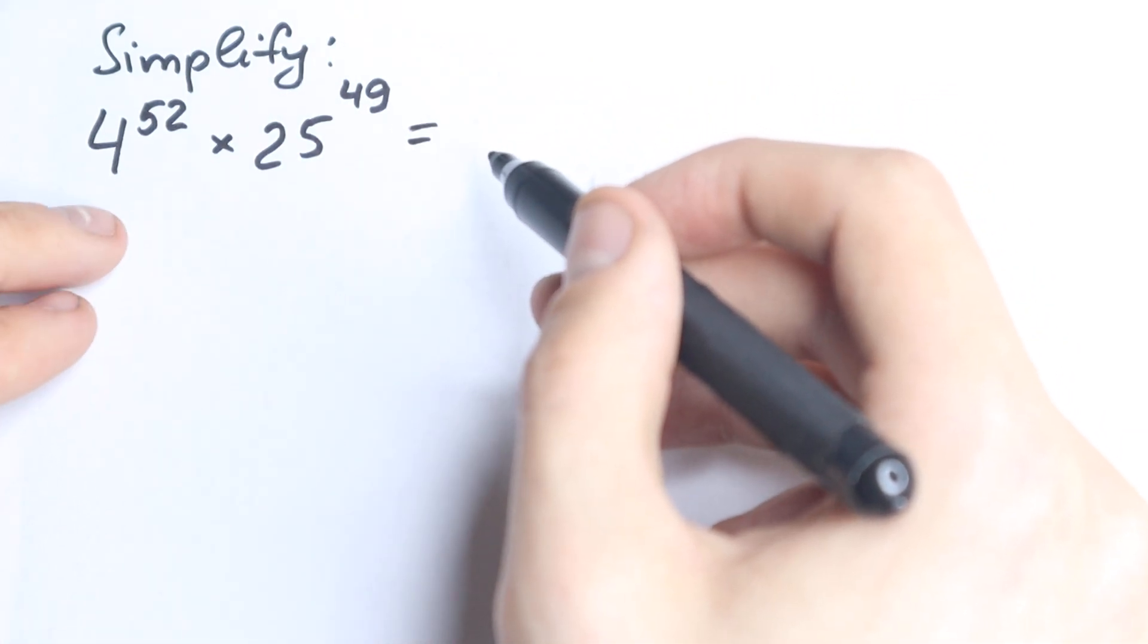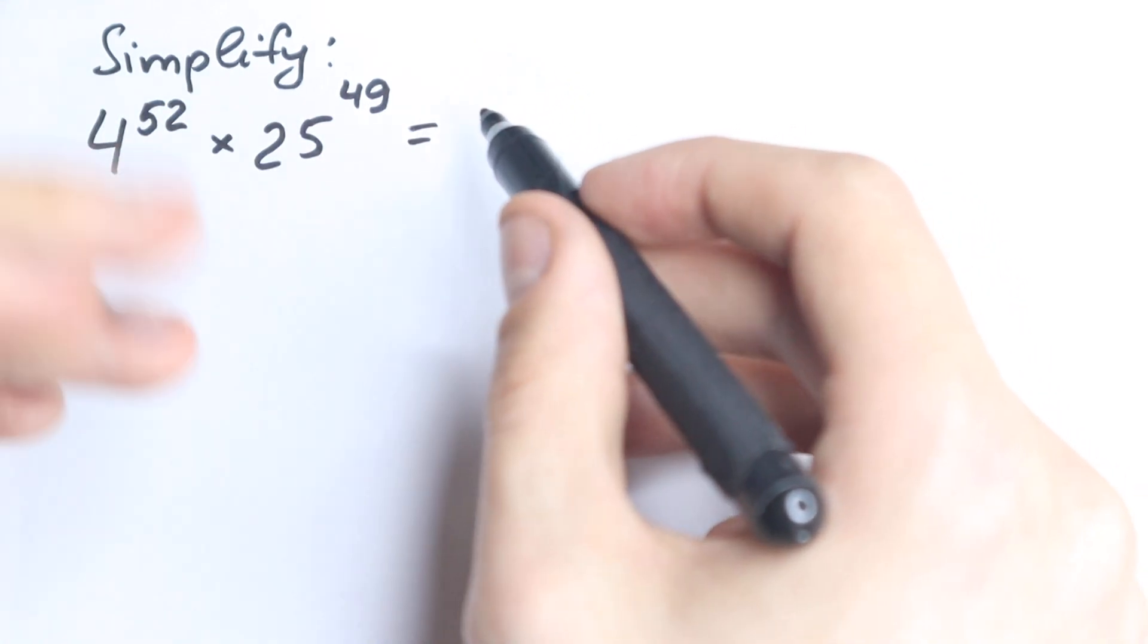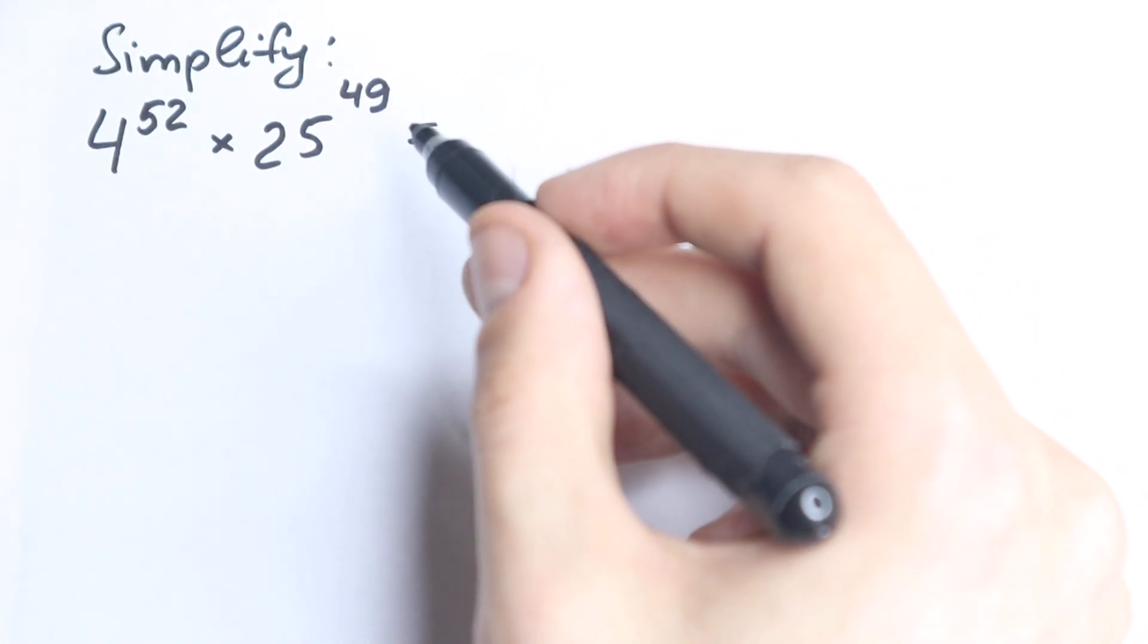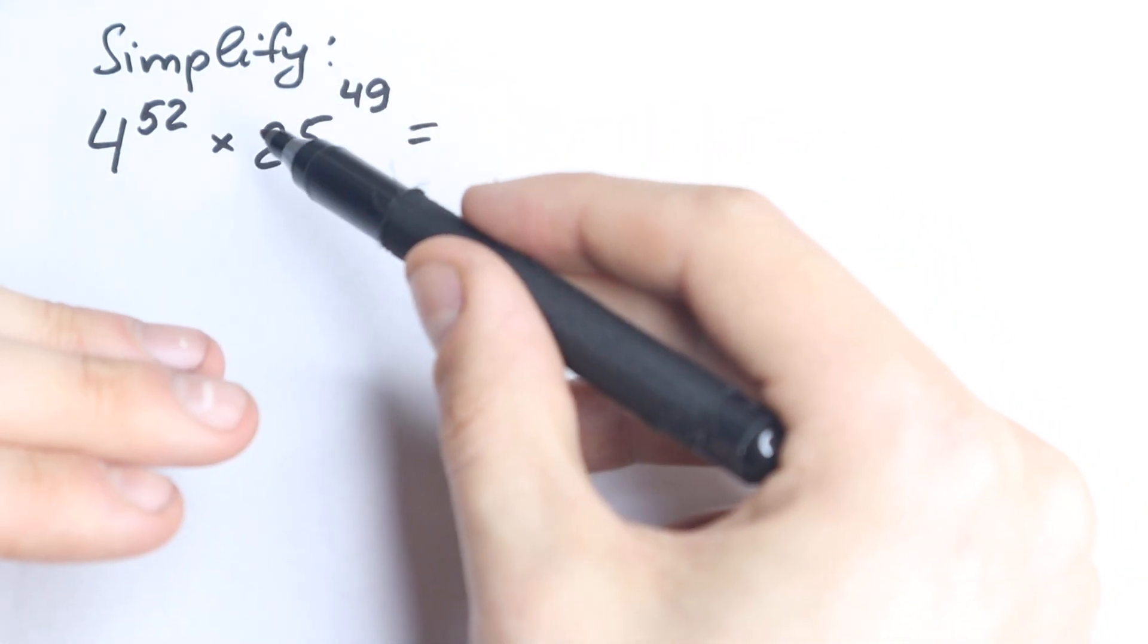First of all, we have different numbers: 4, 25, 52, 49. So how can we start? What do we need to do in the beginning? First of all, we have 52 and 49. These look like close powers, close numbers.